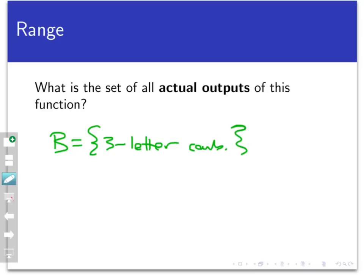Now, the set of all actual outputs certainly seems like it's going to be a subset of this codomain here. And this is something we're going to prove a little bit later on. That the range of my function, the range of the initials function, will definitely be a subset of B.